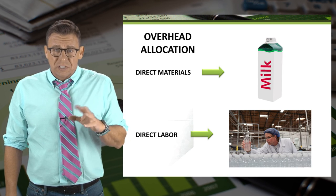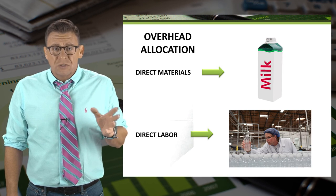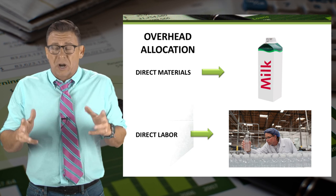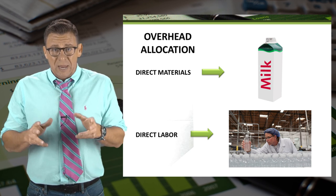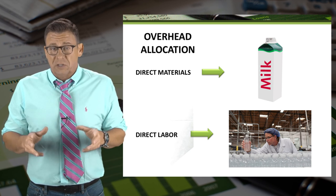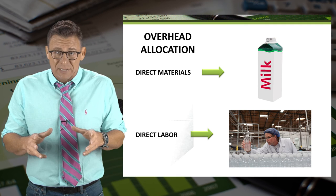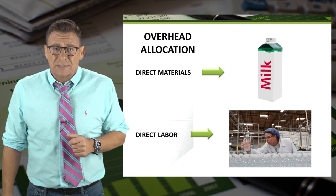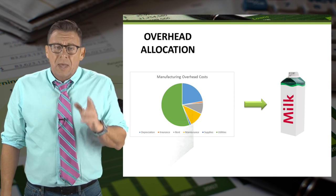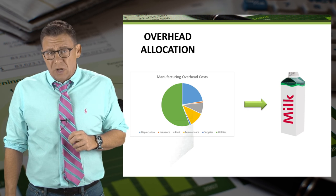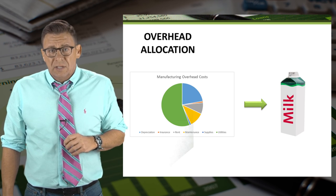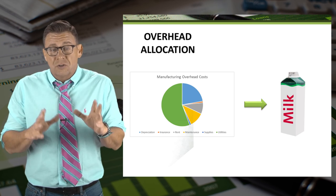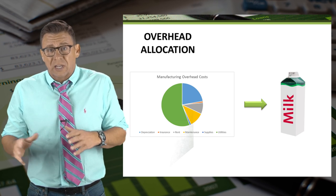Direct materials is a concept most understood because they end up in the product or product packaging. Direct labor is also fairly understandable because it's the labor cost to directly assemble or manufacture the products. Manufacturing overhead is slightly more complicated. In short, it is all the costs in a manufacturing plant that aren't either direct materials or direct labor.